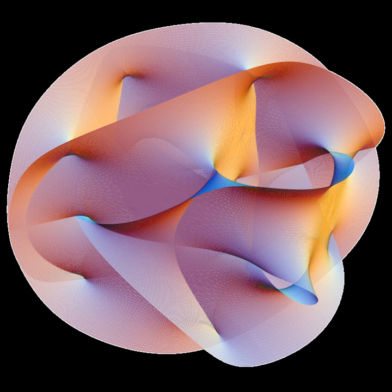Additionally, it can be shown that any massless spin-2 field would give rise to a force indistinguishable from gravitation, because a massless spin-2 field would couple to the stress-energy tensor in the same way that gravitational interactions do. This result suggests that if a massless spin-2 particle is discovered, it must be the graviton.